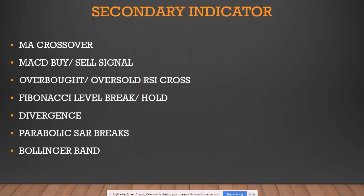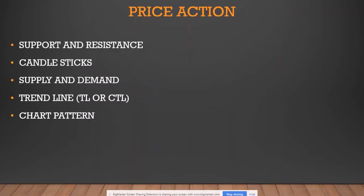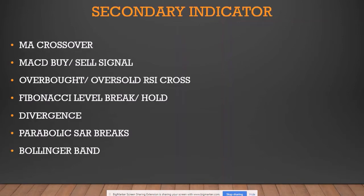Having these tools and following them consistently is what's going to matter. Write down: price action — support/resistance, candlestick patterns, supply and demand, trend lines, chart patterns — and secondary indicators — moving averages, MACD, RSI, Fibonacci, divergence, Parabolic SAR, Bollinger Bands. You can find endless information on these online. What I want to go over are things that professional traders have discovered, back-tested, demo-tested, and live-traded to determine what does and doesn't work.